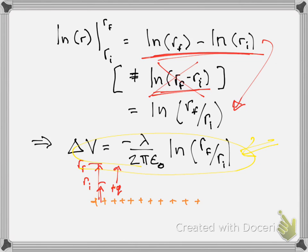So the end result is that the change in potential between those two points is given as this function. Remember, we're talking about moving between two points — it doesn't have to be a plus charge moving between them, because it's the change in potential between two points; you don't need a charge there. If you want the change in potential energy, then delta PE equals Q times delta V. A positive charge moves to lower potential energy; a negative charge actually moves inward, toward higher potential, but also to lower potential energy.